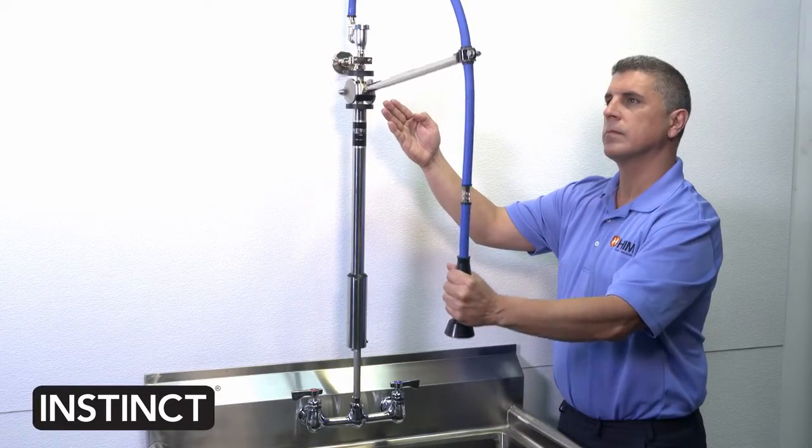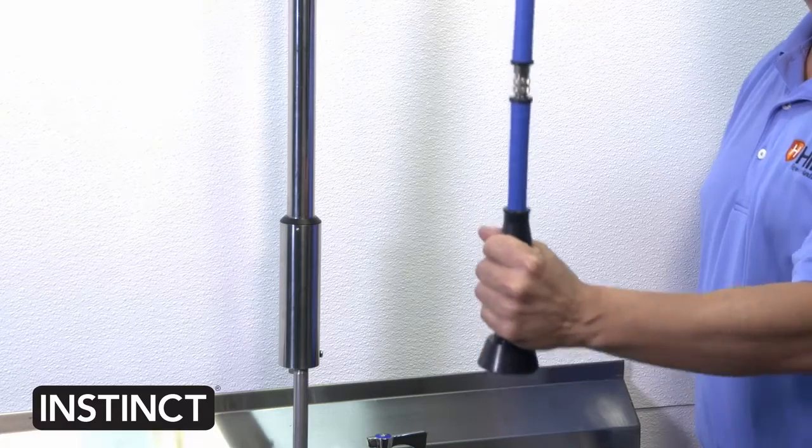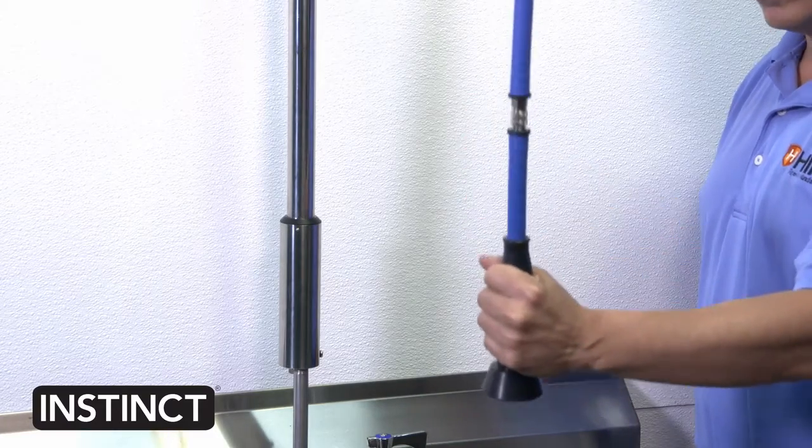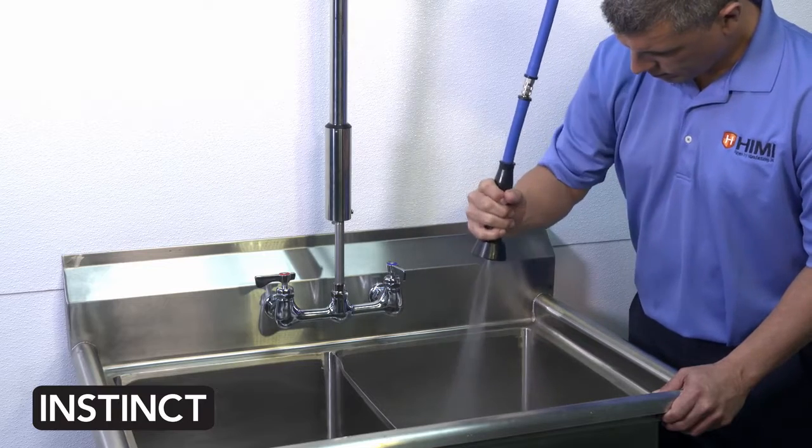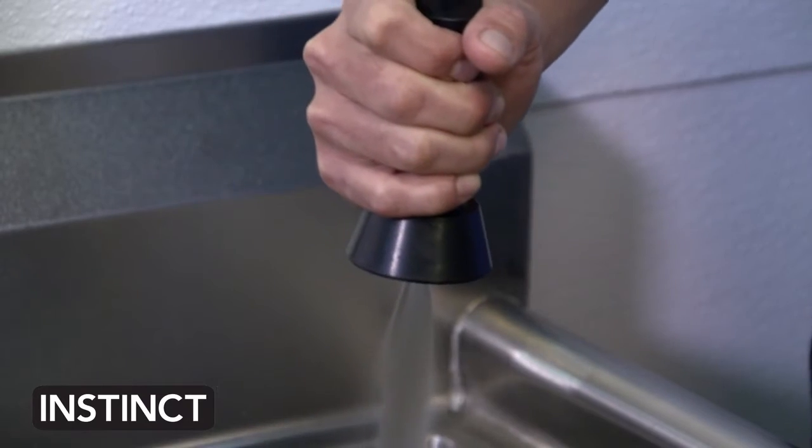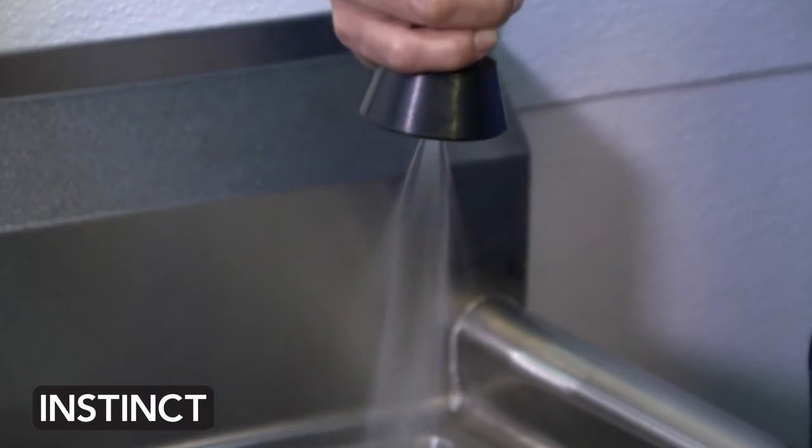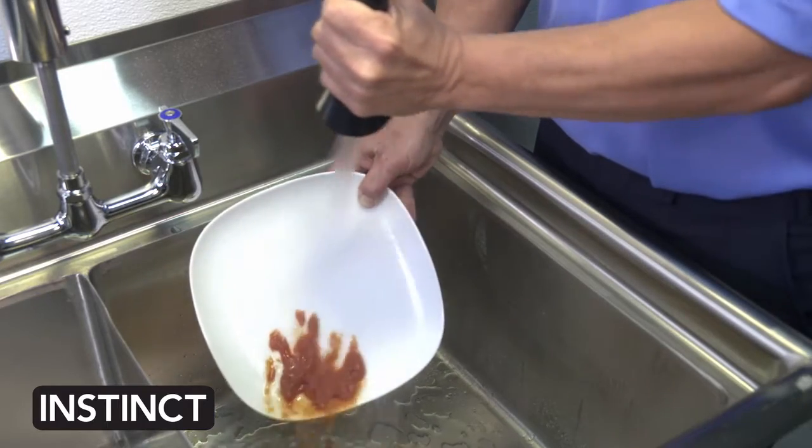It currently features a unique and patented pull-down activation system instead of the standard cumbersome squeeze handle. Just push down to activate water flow with a single touch and the Instinct faucet sprays outside 60 PSI of pressure with a low flow rate of 1.25 gallons per minute, reducing water usage while cleaning your dishes spotless.